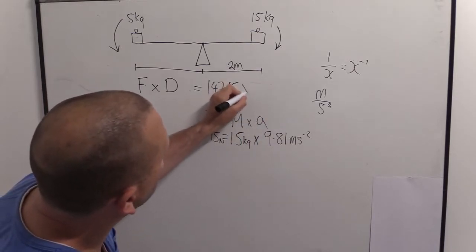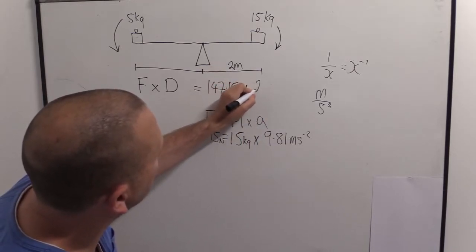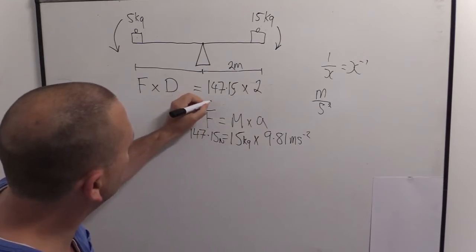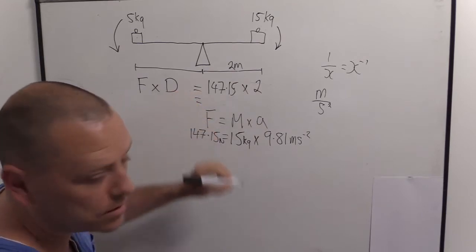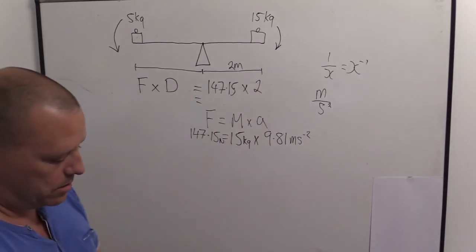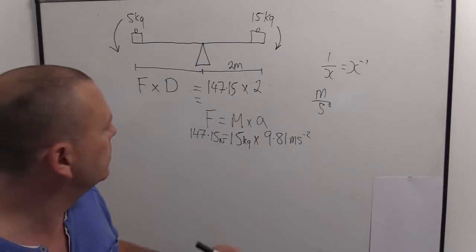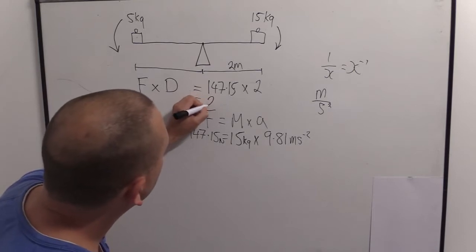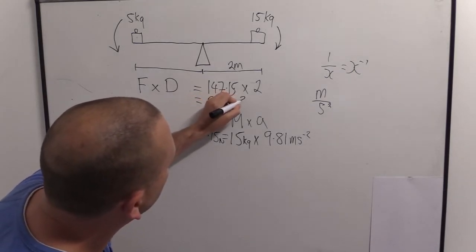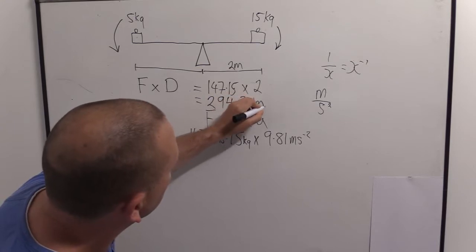And that is times by the distance of two meters. So this side is going to be three times two, times two, times two, 294.3, 294.3 newton meters.